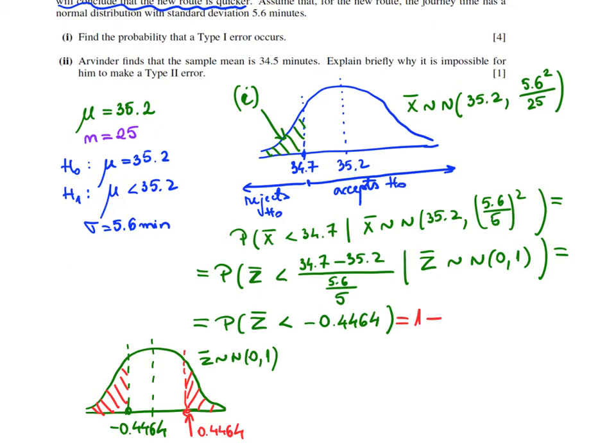So this one is the same as 1 minus the whole area, minus phi of, and phi, remember, is the function that gives you the area from the left to the point, phi of 0.4464. So practically 1 is the whole area, and this number here is this area here. And when you subtract it, you are left with the red area on the right, which is the same as the red area on the left that you actually need. And this one will give me 0.328 to 3 significant figures. And you can do this from your calculator as well.